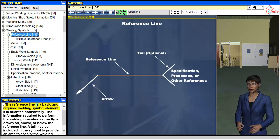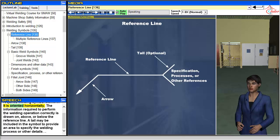The reference line is a basic and required welding symbol element. It is oriented horizontally. The information required to perform the welding operation correctly is drawn on, above, or below the reference line.